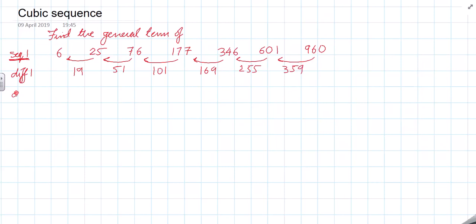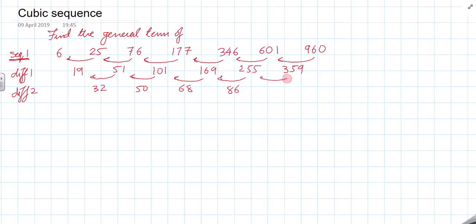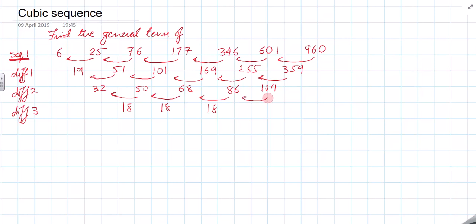You keep doing differences until you get a constant difference. In a calculated paper you can use a calculator; in a non-calculator paper, subtract carefully. I keep finding differences until I get a constant difference. And I am getting a constant difference: 18, 18, 18, 18, 18.